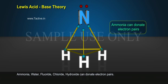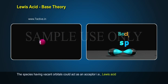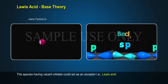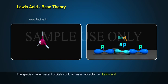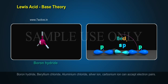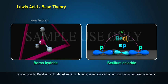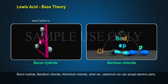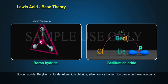The species having vacant orbitals could act as an acceptor, that is, a Lewis acid. Boron hydride, beryllium chloride, aluminium chloride, silver ion, and carbonium ion can accept electron pairs.